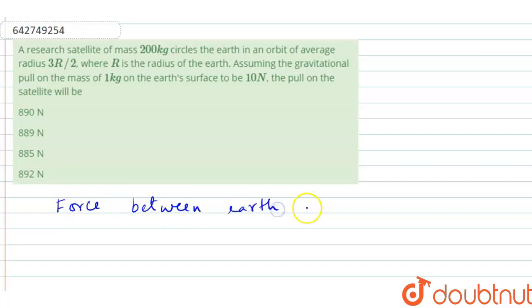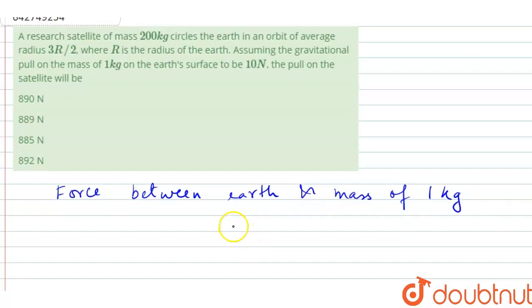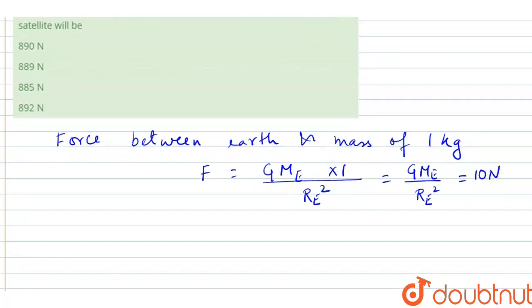So let us first consider force between earth and mass of 1 kg. The force equals F = GMₑ × 1kg / Rₑ², that is GMₑ / Rₑ² = 10 newton. It is given already.